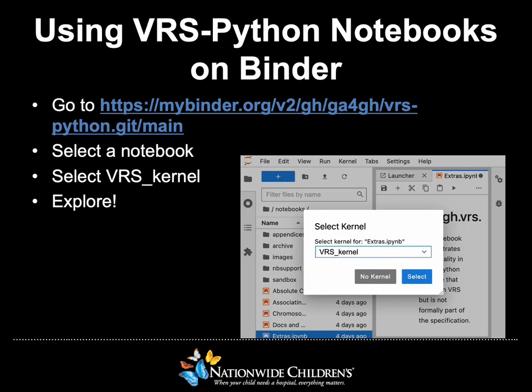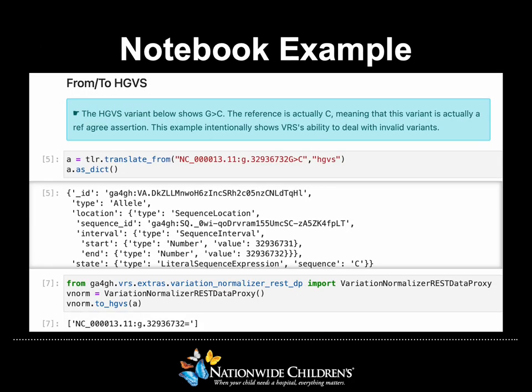Using the cloud-based notebooks is simple. Visit the Binder URL listed, select any notebook, select the VRS kernel as shown in the image, and then you're free to explore. Here's an example of what one of the notebooks looks like. This specific notebook enables a user to edit the code to translate to and from HGVS. This is only one of many capabilities built into the notebooks. Additionally, users are able to add their own cells and write their own VRS Python code and view the output by running the cells.